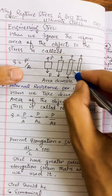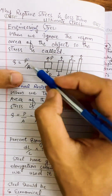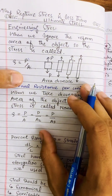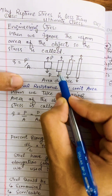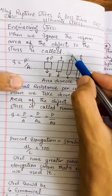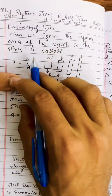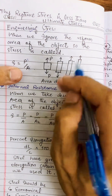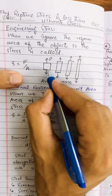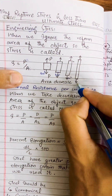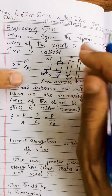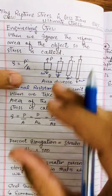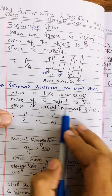If we do not ignore the decreasing cross-sectional area and instead consider the actual reduced area at each point, the resulting stress is called nominal (true) stress. For example, if we keep using one square meter area throughout despite the object elongating, that is engineering stress. Nominal stress accounts for the actual reduced area, which is why nominal stress is always greater than engineering stress.